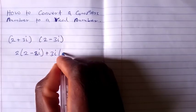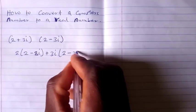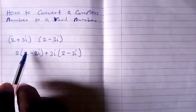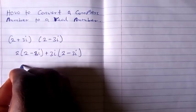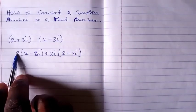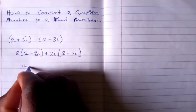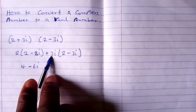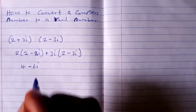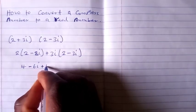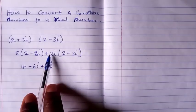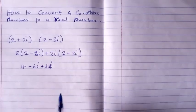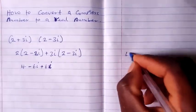Now we multiply this by this. We have 2 times 2 equals 4, 2 times minus 3i we have minus 6i, 3i times 2 we have plus 6i, 3i times minus 3i. Remember that i times i is equal to minus 1.